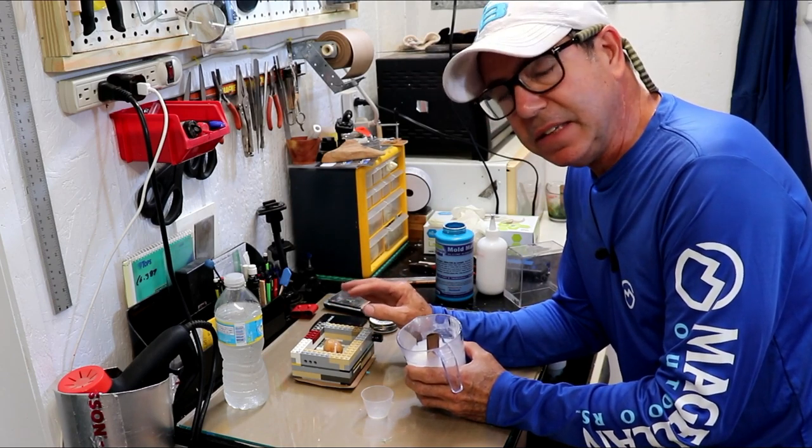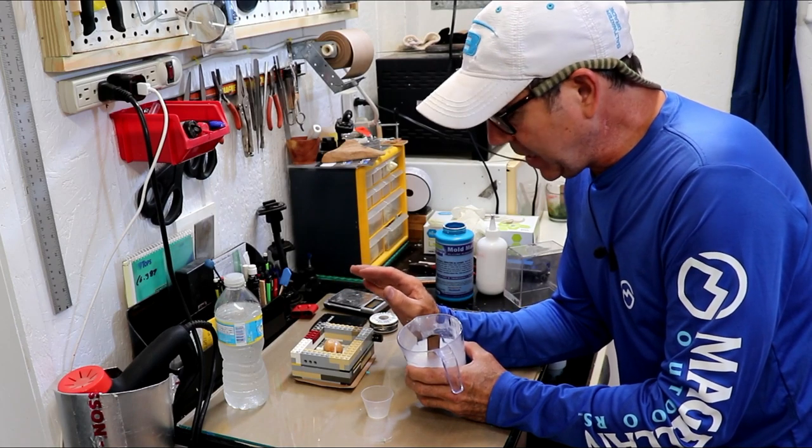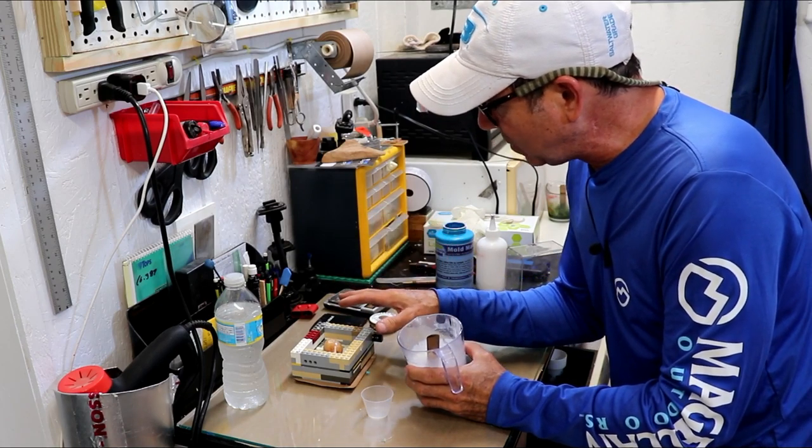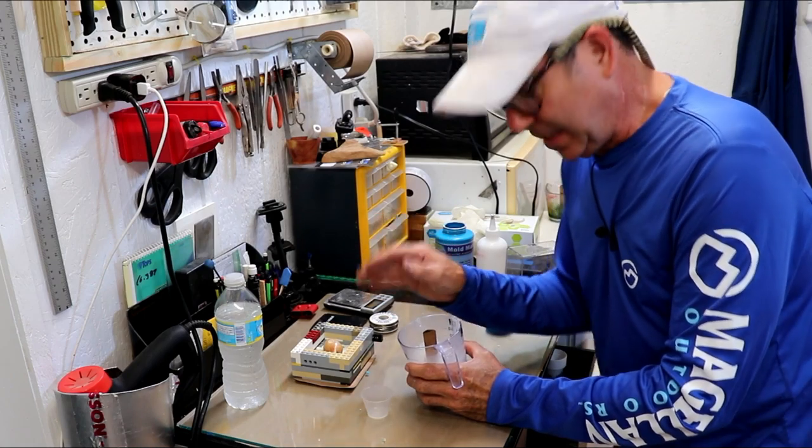Now at this stage of the game you don't have to add any kind of bond breaker. You don't have to put Vaseline or mold release or anything. The silicone won't stick to anything that's already in there. But what silicone will stick to is silicone.